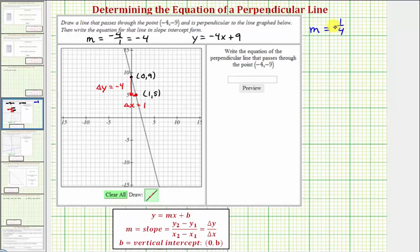So to find the equation of our perpendicular line, since we now know the slope, we just need to find b, the vertical intercept, to write the equation in slope intercept form.